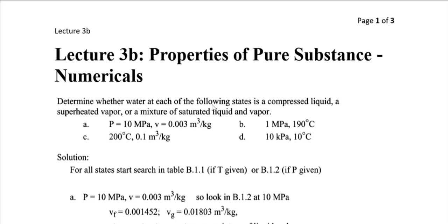Lecture 3b: Properties of pure substances. We will be doing some numericals. The first numerical asks us to determine whether water at each of the following states is a compressed liquid, a superheated vapor, or a mixture of saturated liquid and vapor. In all four problems, we are given two conditions and must find which phase the water exists in using the steam table.